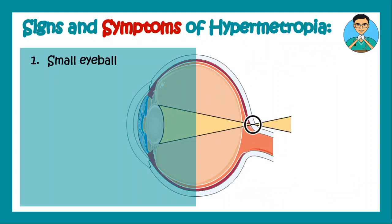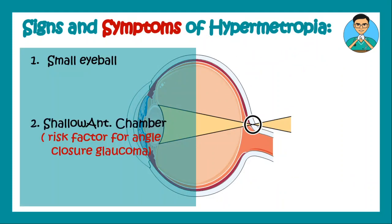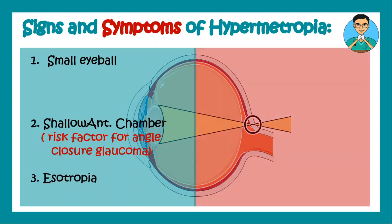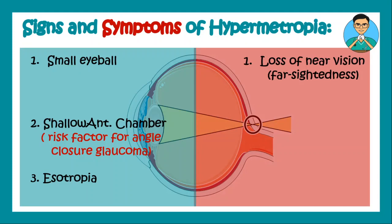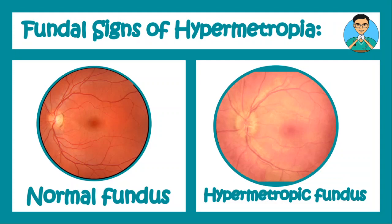Signs of hypermetropia include small eyeball and shallow anterior chamber, which also makes it a risk factor for angle closure glaucoma, as well as esotropia. Symptoms include loss of near vision, which is why it is known as farsightedness, and asthenopia, which is easy tiring of the eyes.